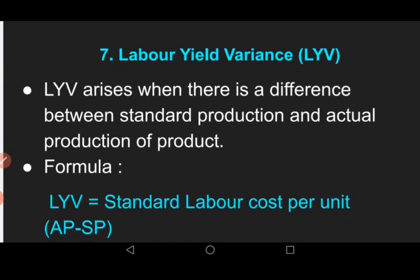The last variance is labor yield variance, which is a very rare case. It arises when there is a difference between standard production and actual production. The formula is: Labor Yield Variance = Standard Labor Cost per Unit × (Actual Production − Standard Production).